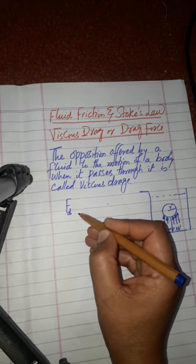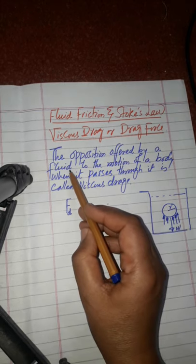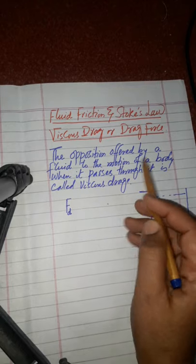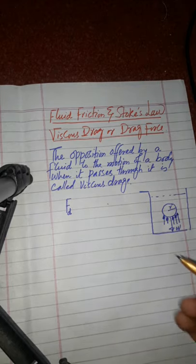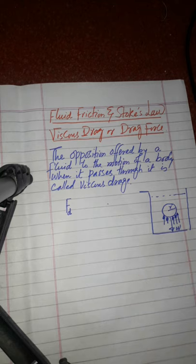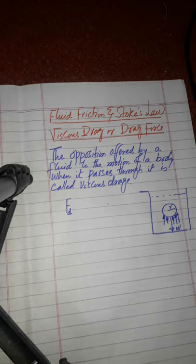Drag force, fluid friction, fluid resistance — this is the opposition offered by a fluid to the motion of a body or object when it passes through it. Remember: viscosity means when the layers of a fluid oppose each other, that is viscosity. But when a fluid opposes an external body, we call it fluid friction, viscous drag, or direct force.